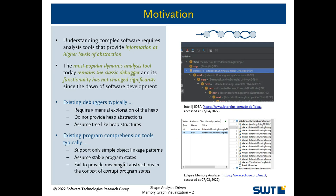Understanding complex software requires analysis tools that provide information at higher levels of abstraction. While static analysis tools are used to derive sound statements about software behavior, their results are particularly inaccurate when applied to complex software. In contrast, dynamic analysis tools work with concrete data and do not suffer from over-approximation. The most popular dynamic analysis tool today remains the classic debugger.